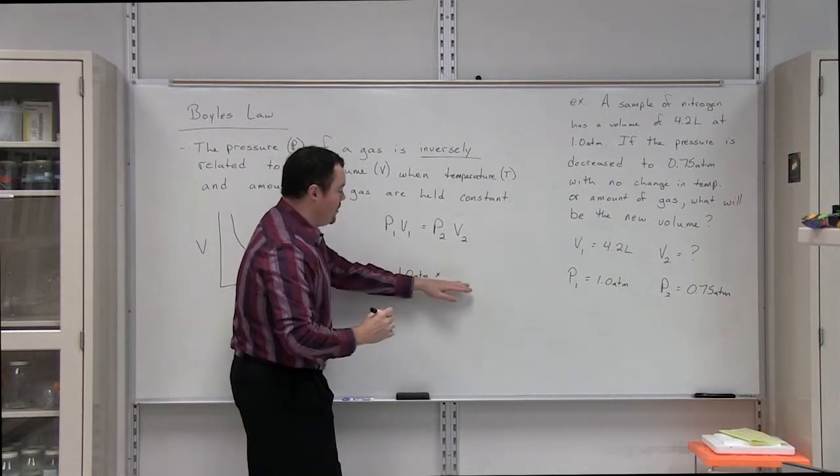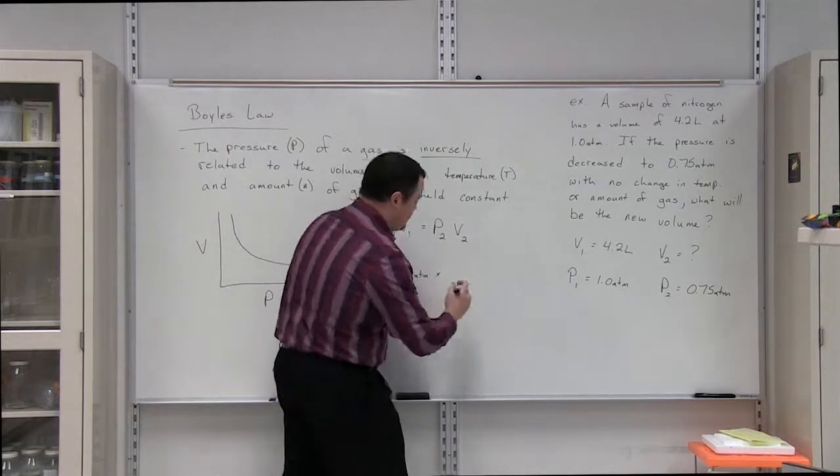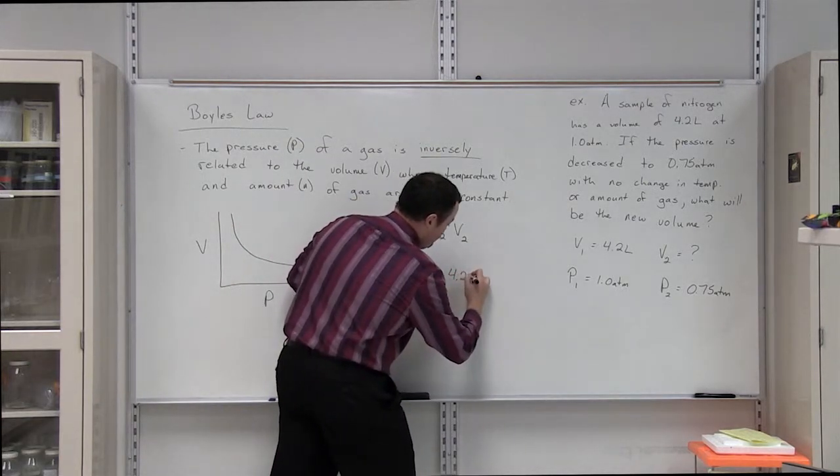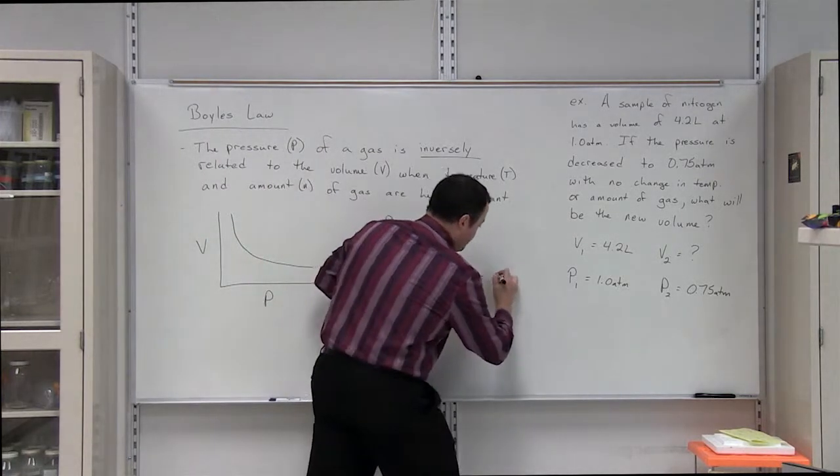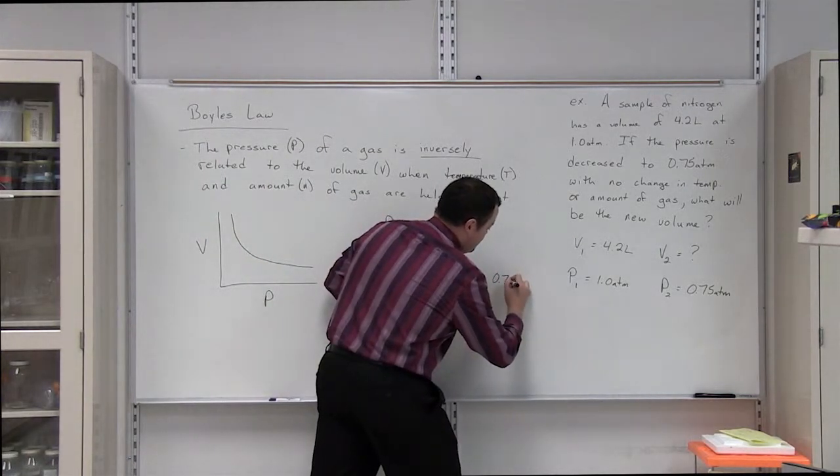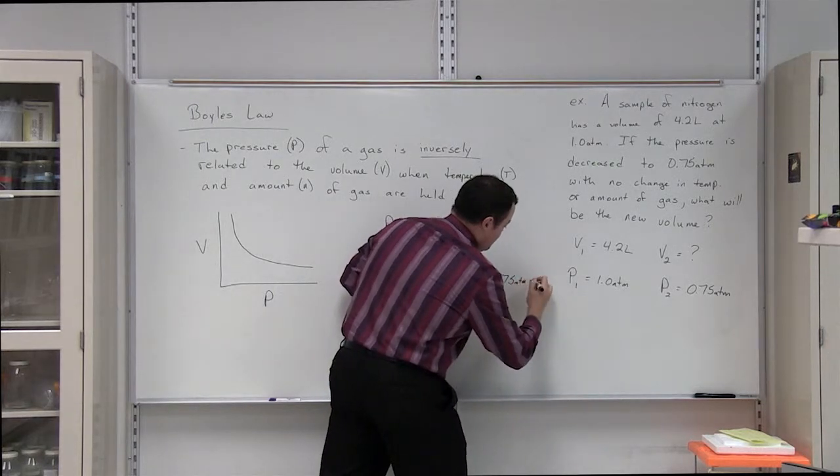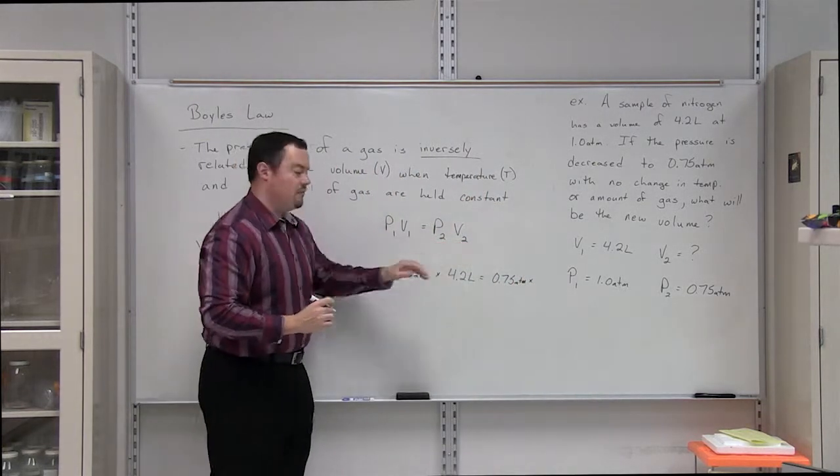So, we've got P1, we're going to multiply that by V1, which is 4.2 liters. And that's going to be equal to 0.75 atmospheres multiplied by V2.